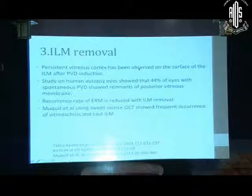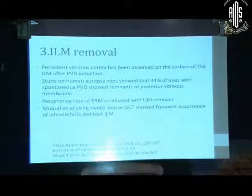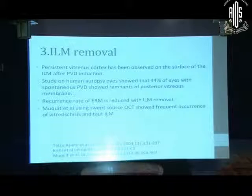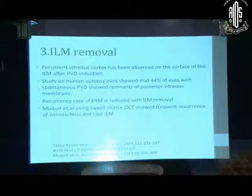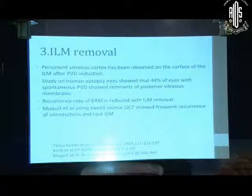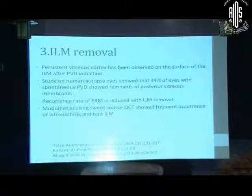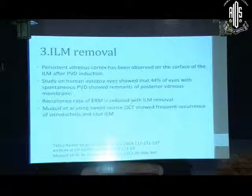The third aspect is ILM removal. If you remove the ILM, you are sure that you have removed all the ERM and premacular cortex. A study done on human autopsy eyes showed that 44% of eyes with spontaneous or induced PVD had vitreous remnants — that is the reason why you need to remove the premacular cortex. The recurrence rate of epiretinal membrane is reduced with ILM removal, and it has also been shown that in diabetics there is a taut ILM which is the cause of traction.